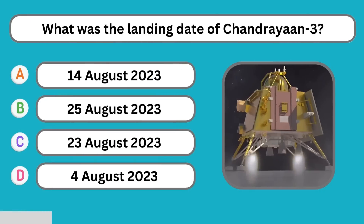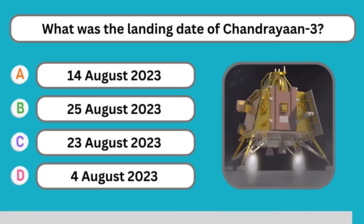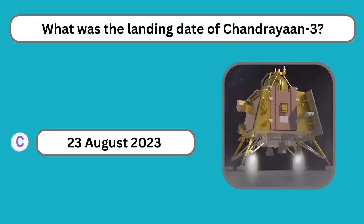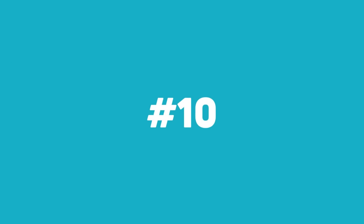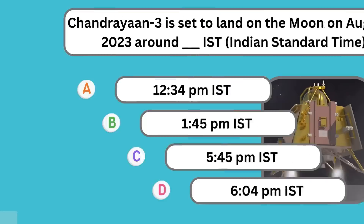What was the landing date of Chandrayaan 3? 23rd August 2023.